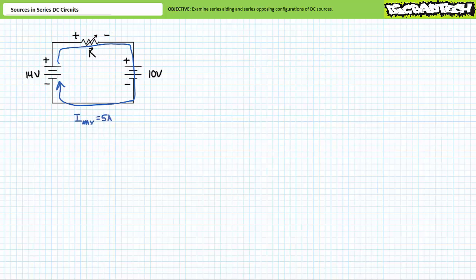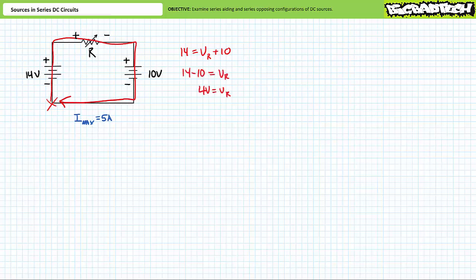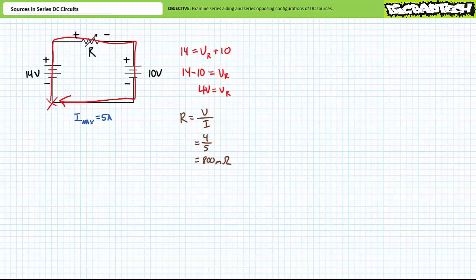Let's say the battery can handle a maximum of 5 amps of charge current. A Kirchhoff's voltage law analysis starting here and traveling clockwise demonstrates that a rise of 14 volts equals the voltage drop across the variable current controlling resistor plus the voltage drop across the discharged battery presently at 10 volts. An algebraic rearrangement of the KVL equation shows the variable resistor must experience a 4 volt drop. An application of Ohm's law demonstrates the variable current controlling resistor needs to be adjusted to 800 milliohms.